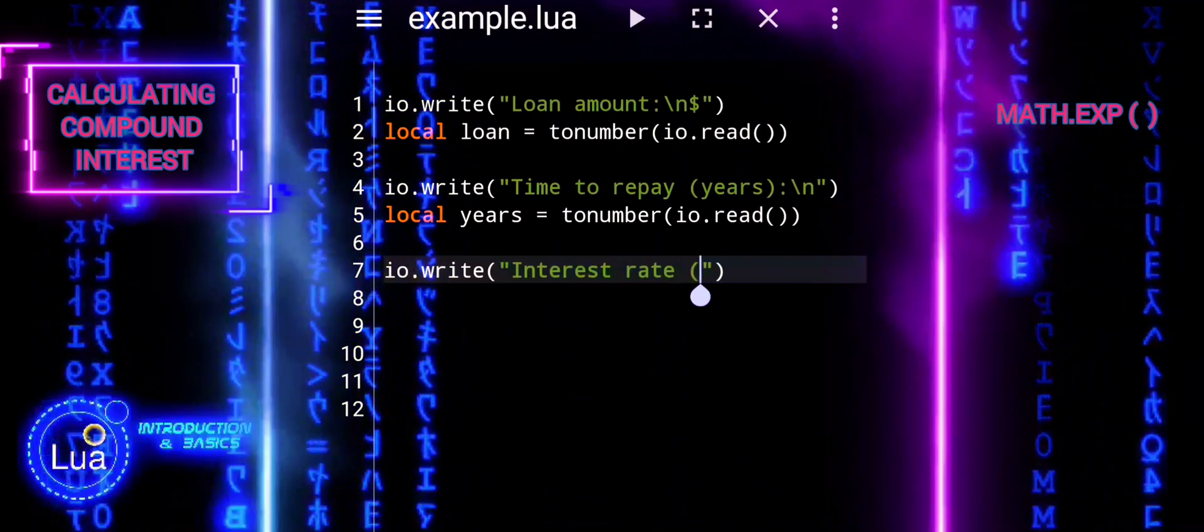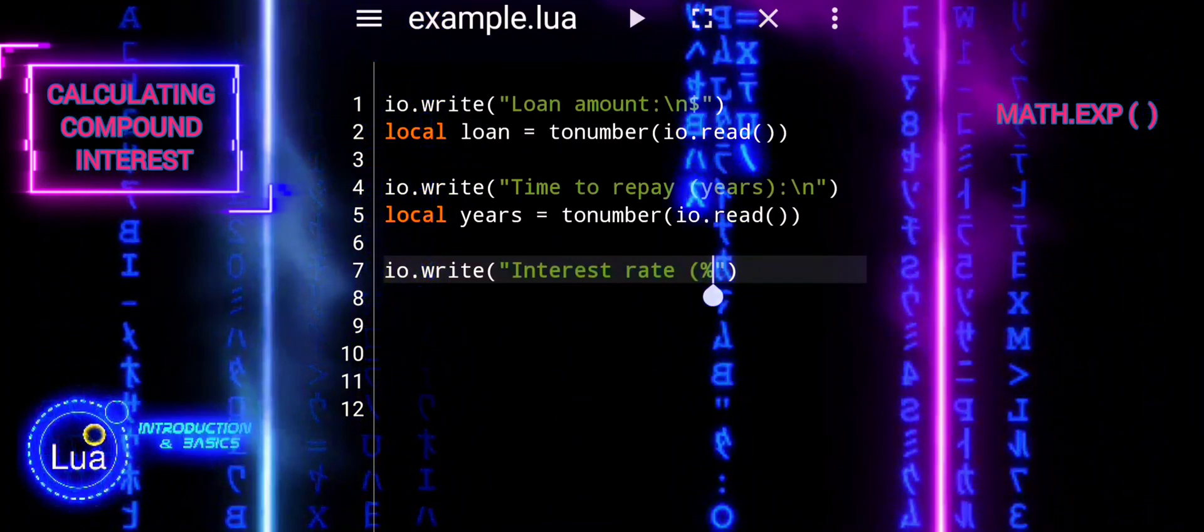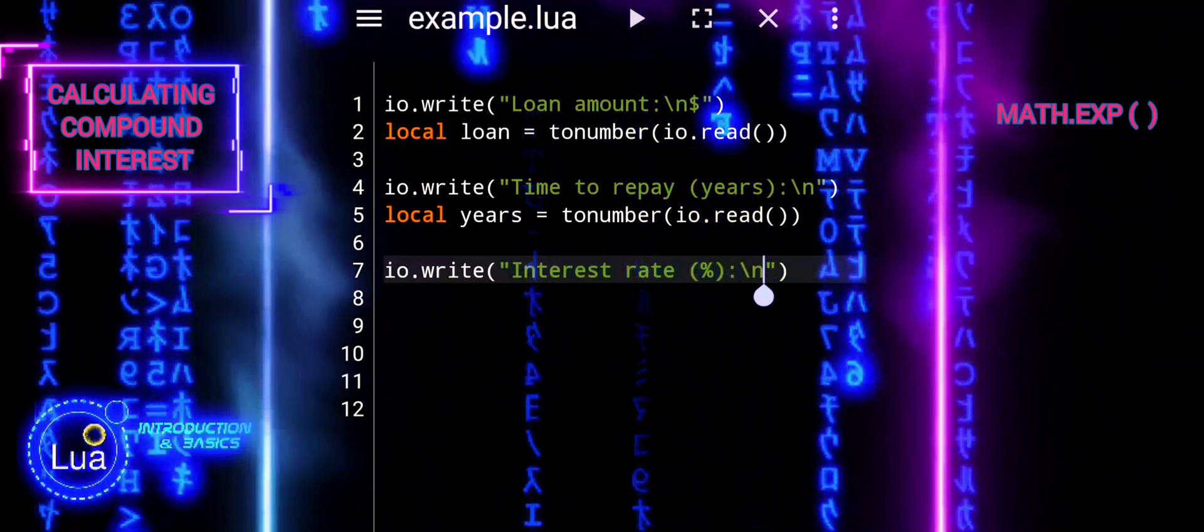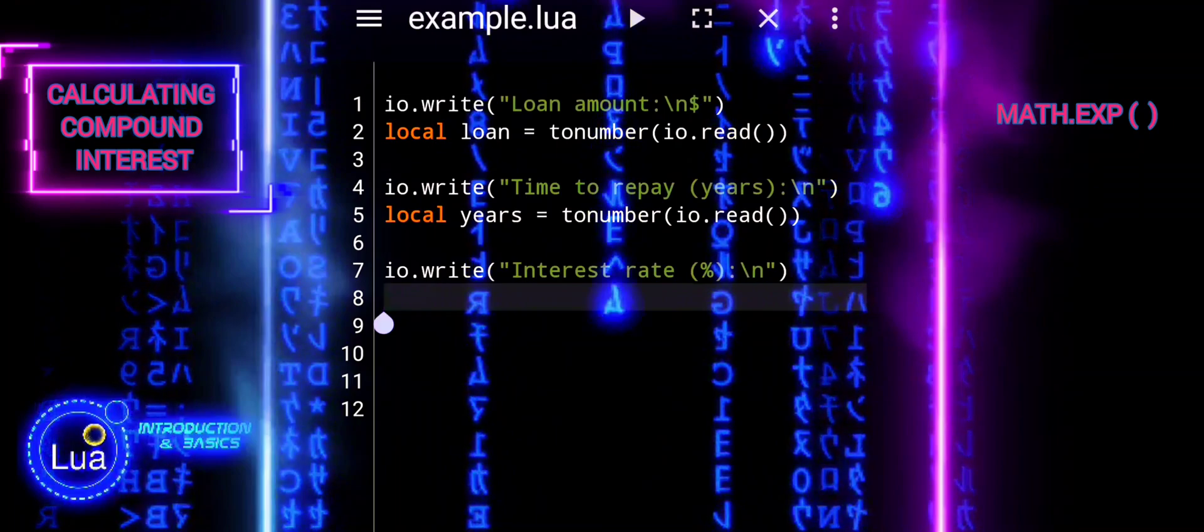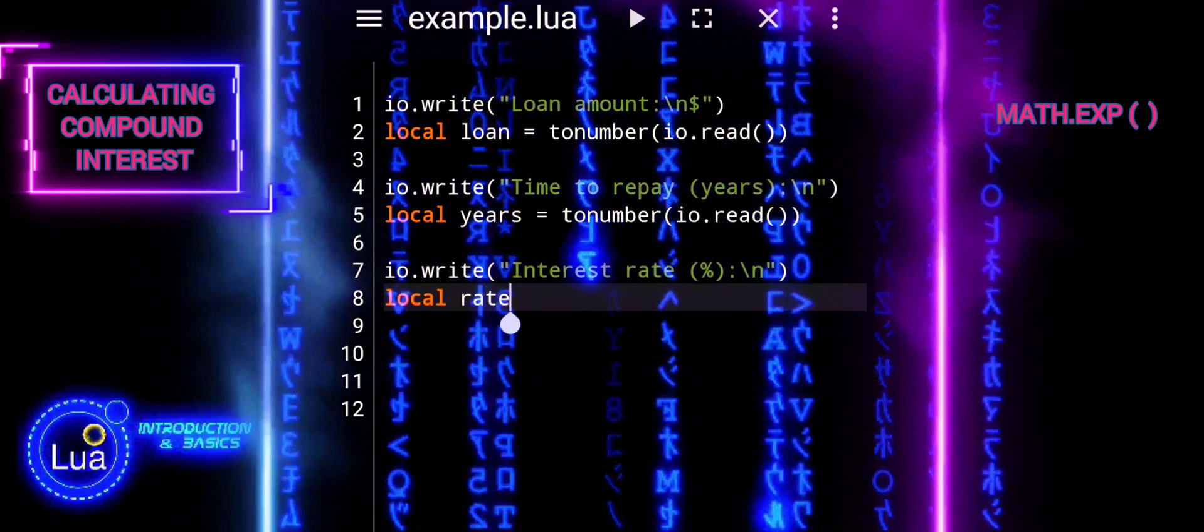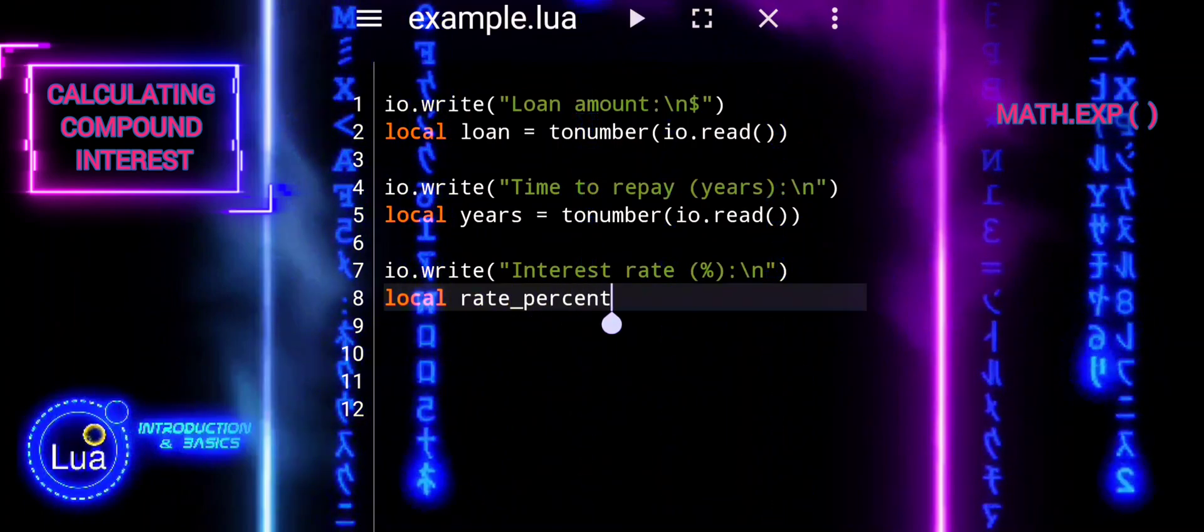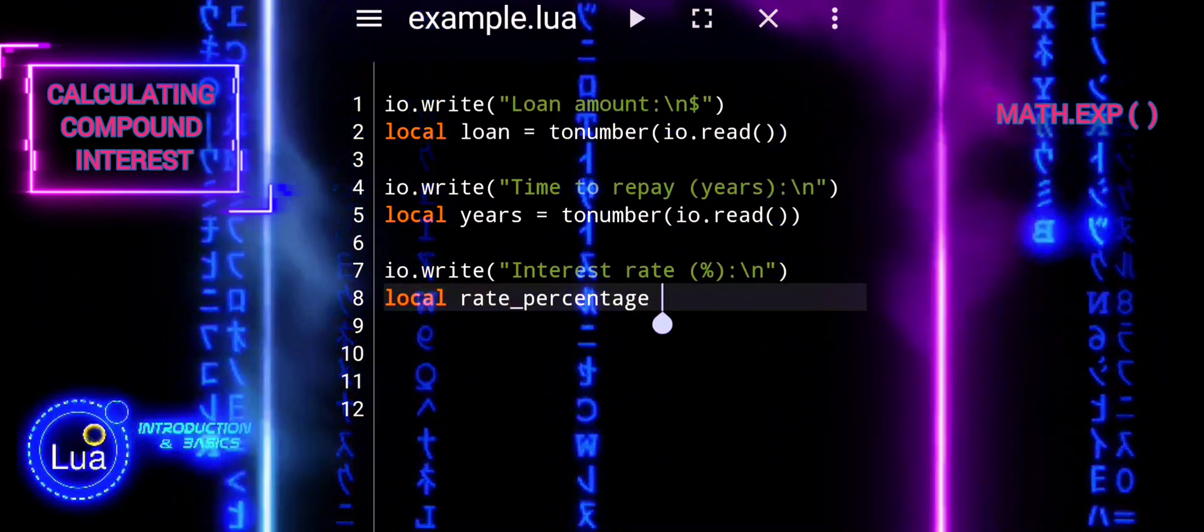Now the user is prompted to input the interest rate for the loan, expressed as a percentage. The entered value is then captured as a string using the io.read function. Subsequently, the string input is converted into a numeric value using the tonumber function and stored in the variable rate_percentage.